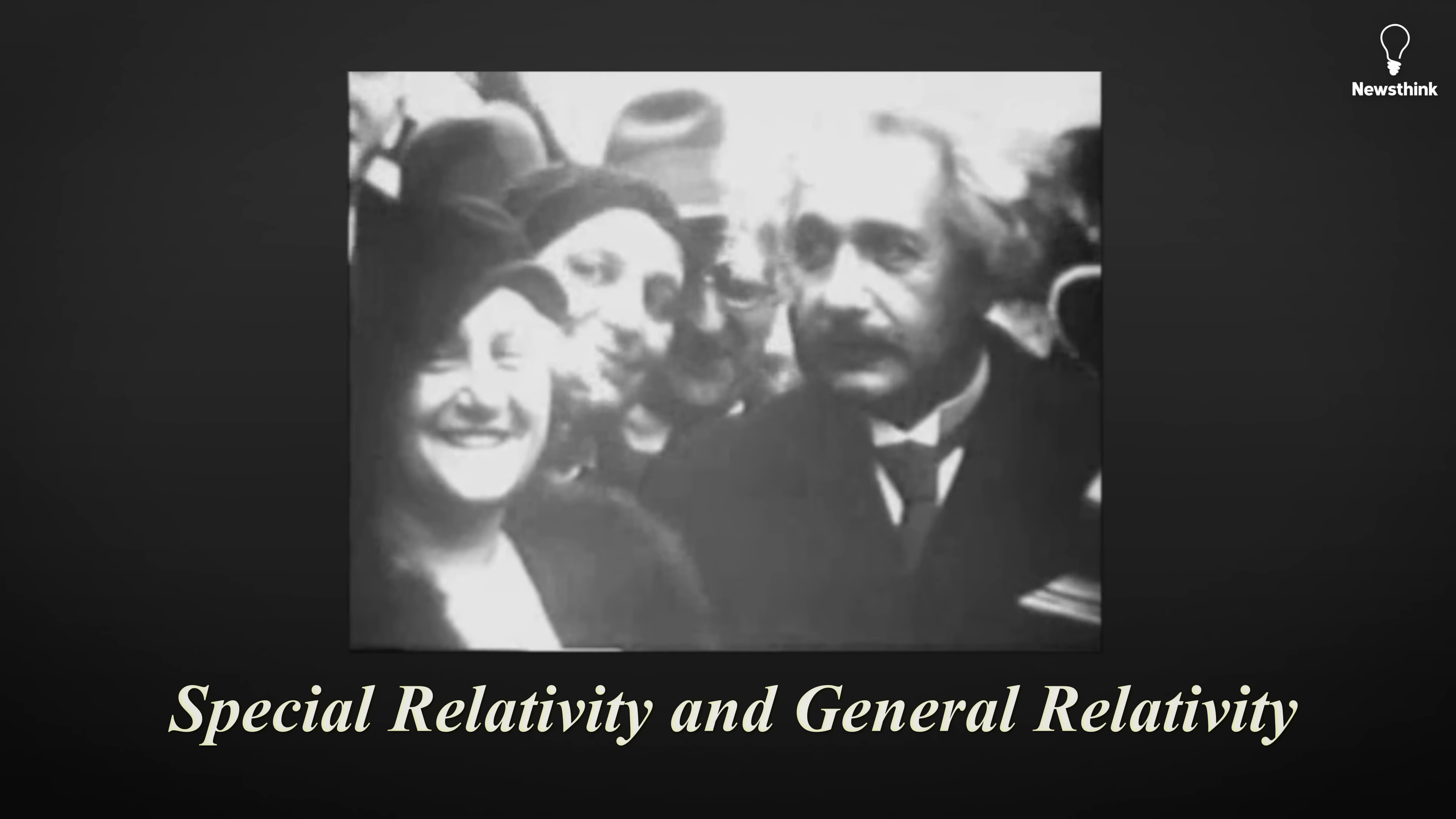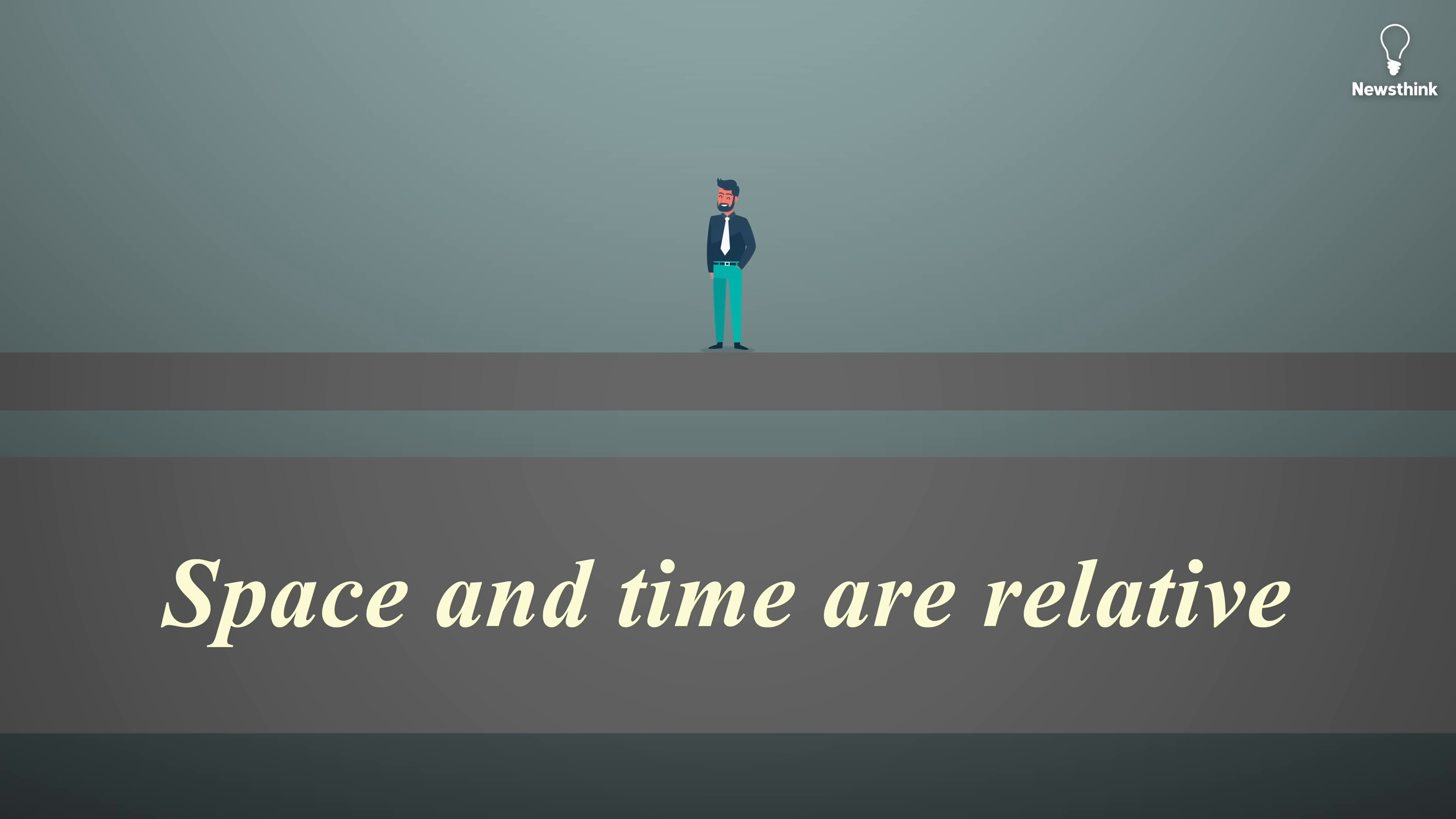Special Relativity and General Relativity made Albert Einstein the most famous scientist on Earth. Einstein's Special Relativity showed that space and time are relative.